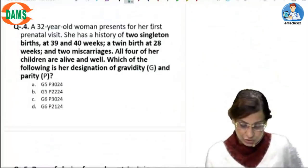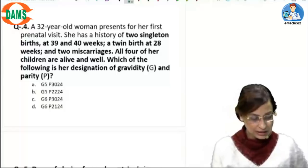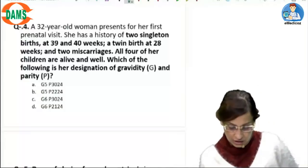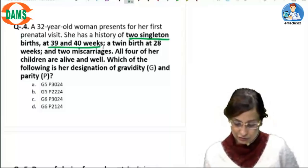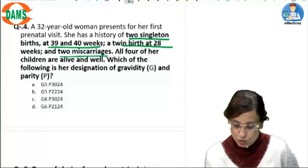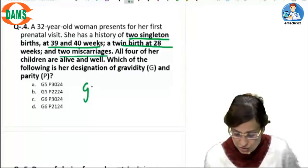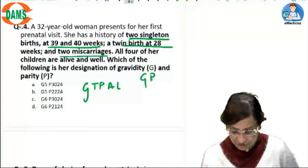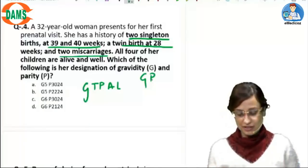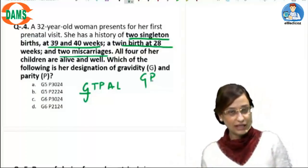So this is a 32-year-old woman. She presents for her first antenatal visit, and she's had two singleton births at 39 and 40, a twin birth at 28, two miscarriages, and we have to write the GTPAL. So this is what is GTPAL. So normally we write only Gravida and Para, but actually it's a five-part system where G is this, while P will be in the form of TPAL.